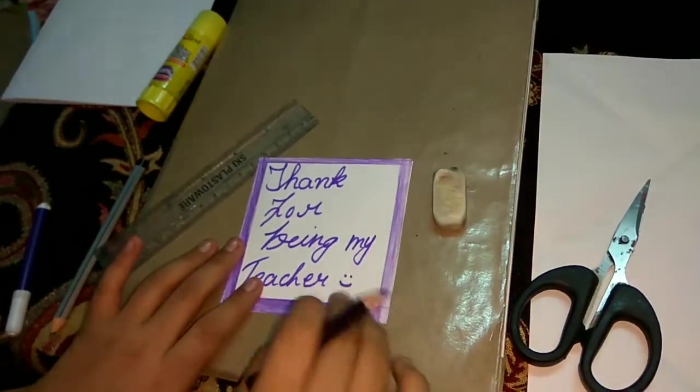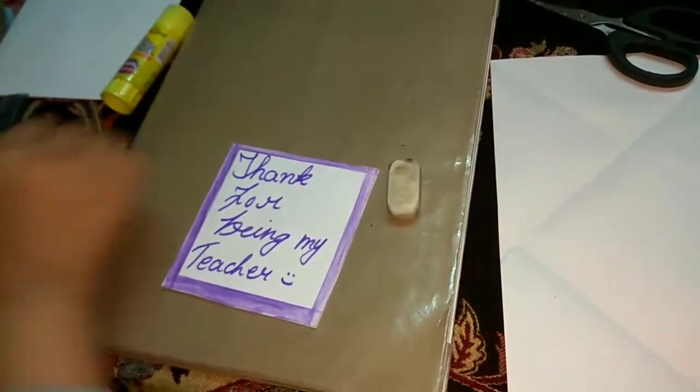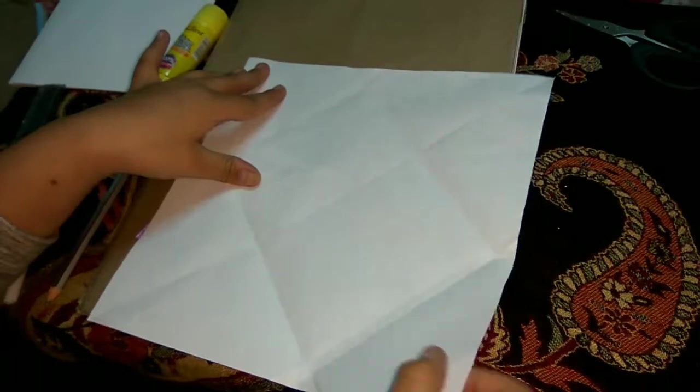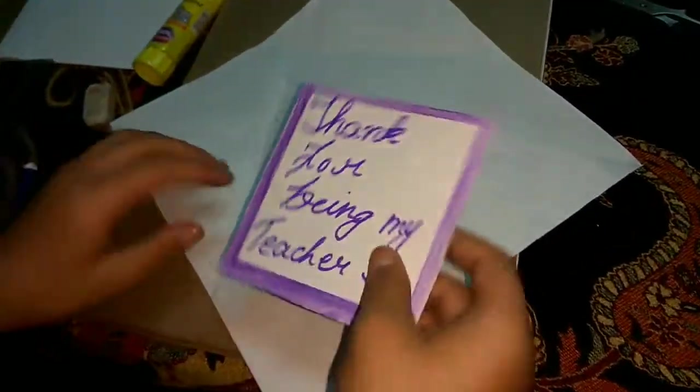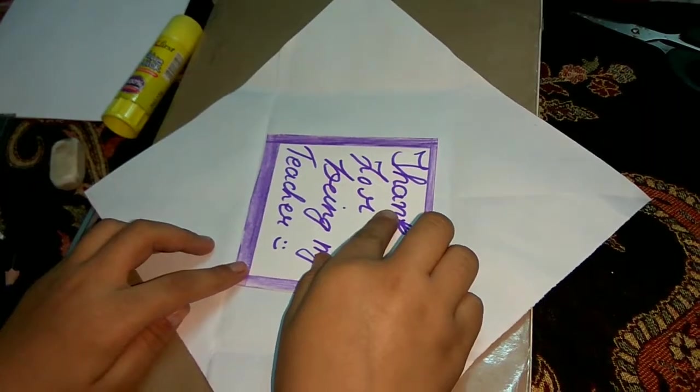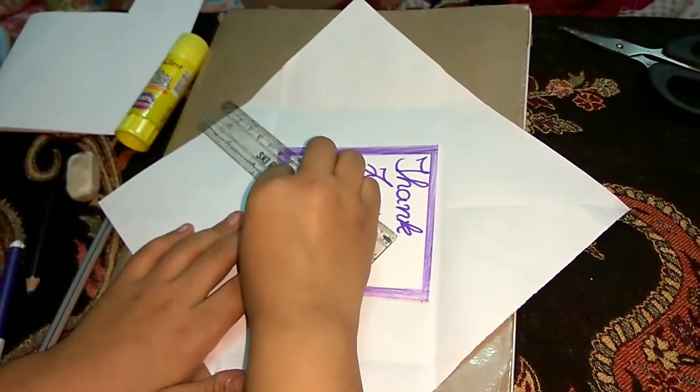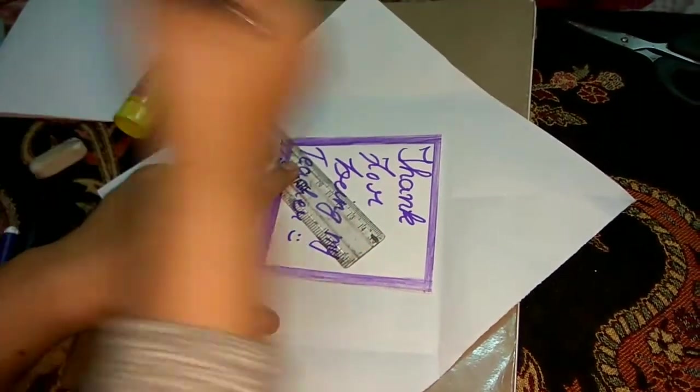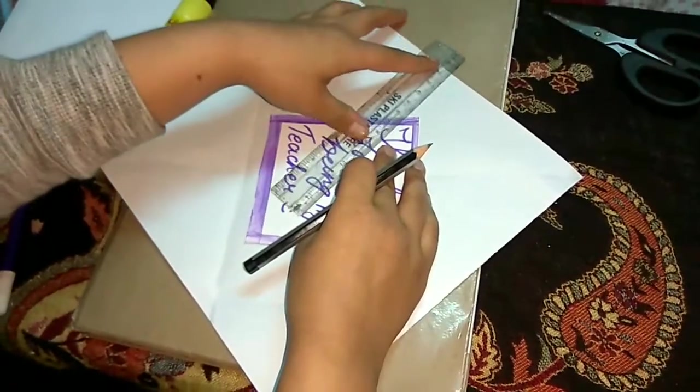Now we have to make the envelope for the card. For making the envelope, you're going to need a square piece of paper. You have to put your card at the center by marking the edge from 1 to 6 centimeters, and from the same side, 1 to 6 centimeters.